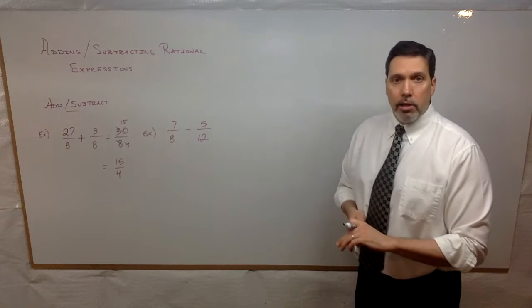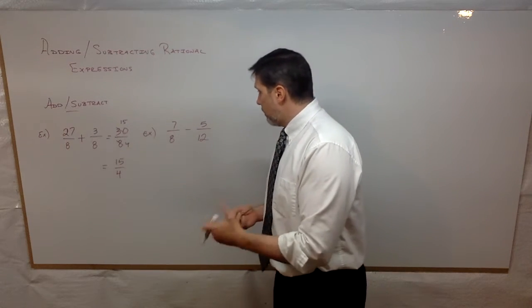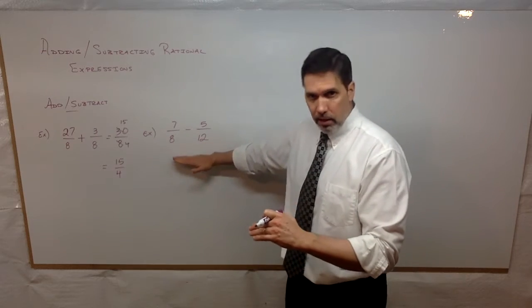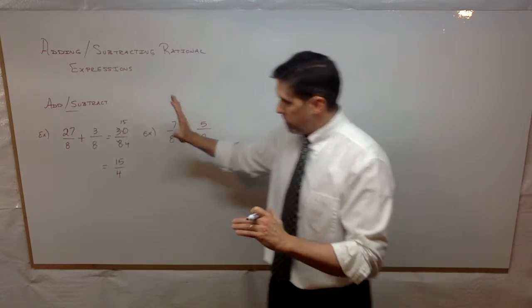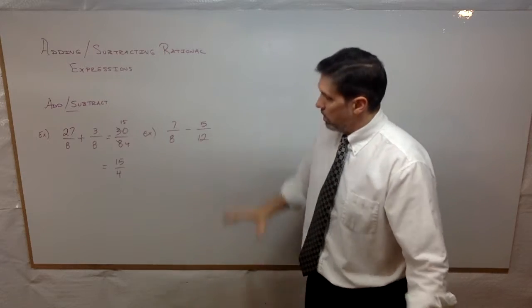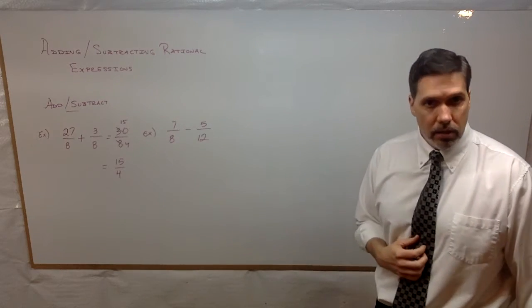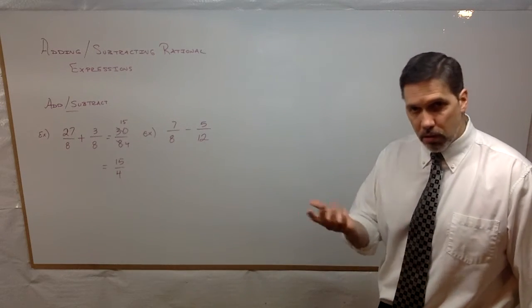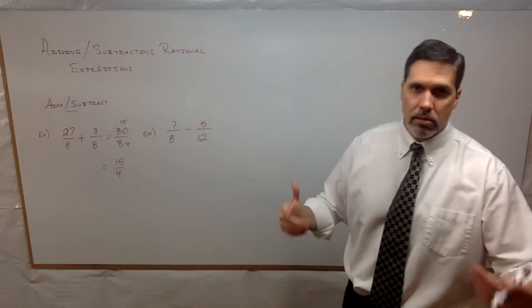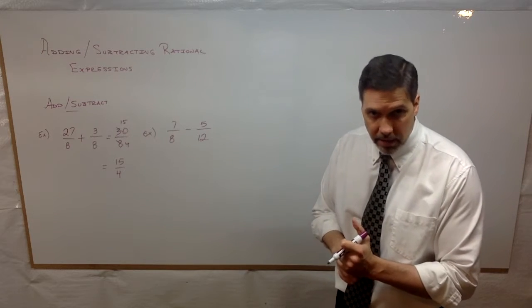Adding and subtracting when the denominators are the same is not very difficult at all. It becomes difficult when the denominators are not the same. We have an example of 7/8 minus 5/12. After practicing common denominators, your first thought might be to subtract the numerators and subtract the denominators. I wish it were that simple, but unfortunately it is not.